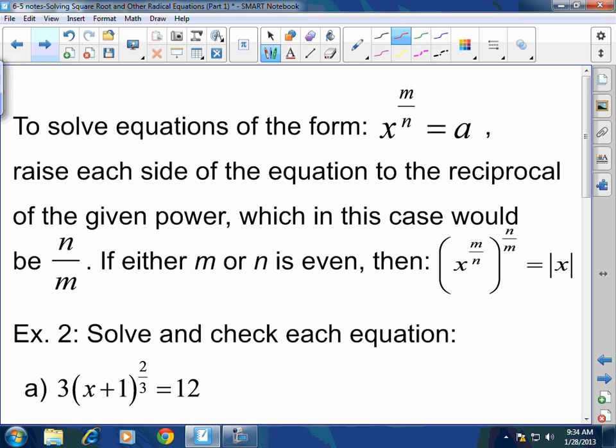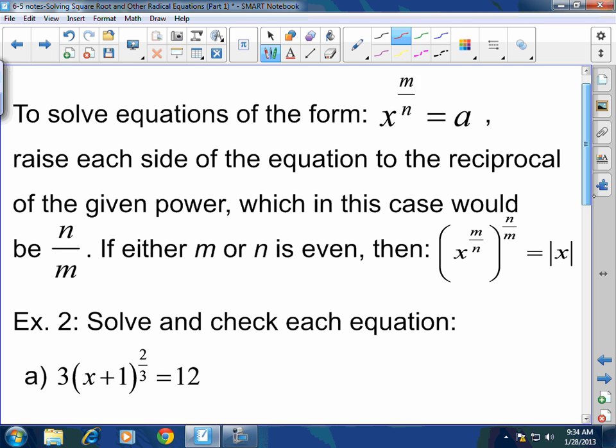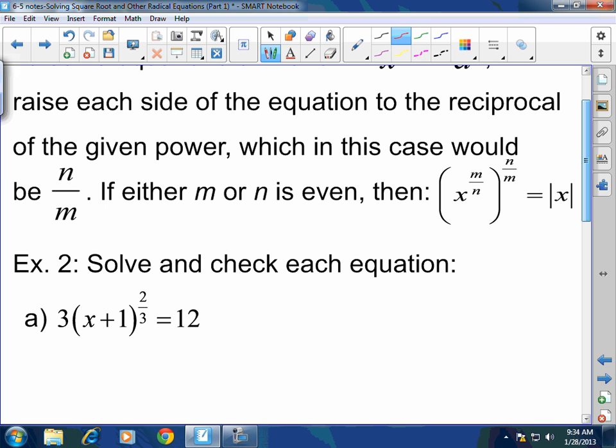Just like if I have it in radical format, I can cancel them out, guys, if I have the exponents in rational exponent form. To solve equations in the form of x to the m over n equals some value a, raise each side of the equation to the reciprocal of the given power, which in this case would be n over m. If either the m or n is even, then x to the m over n raised to the n over m power has to be an absolute value.